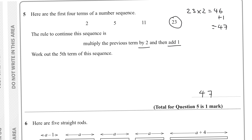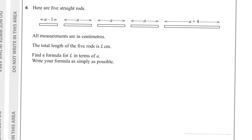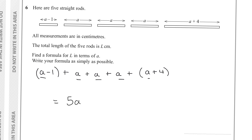Question six has five rods and asks us to find a formula for total length L in terms of a. The five rods are: (a−1), a, a, a, and (a+4). Adding the a's gives 5a, and the constants: −1 plus 4 equals 3. So L = 5a + 3. Always simplify and collect like terms when forming formulas.